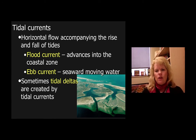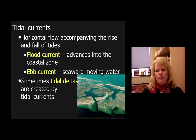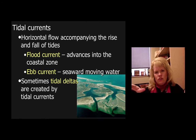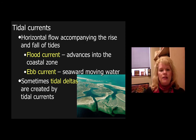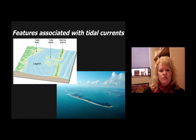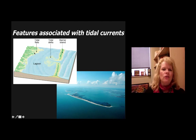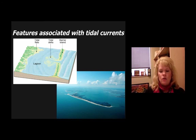Tidal currents are the horizontal flow accompanying the rise and fall of tides. Flood currents advance into the coastal zone and ebb currents move water back out to sea. Sometimes they create sedimentary structures where water loses velocity and drops sediment — similar to how a river fans out and loses energy as it floods back into the ocean — creating deltas. Deltaic deposits from tides are common in shoreline areas with multiple or extreme tides. Features associated with tidal currents include barrier islands, tidal deltas, and tidal flats — a marshland-like environment providing special habitat for many animals.